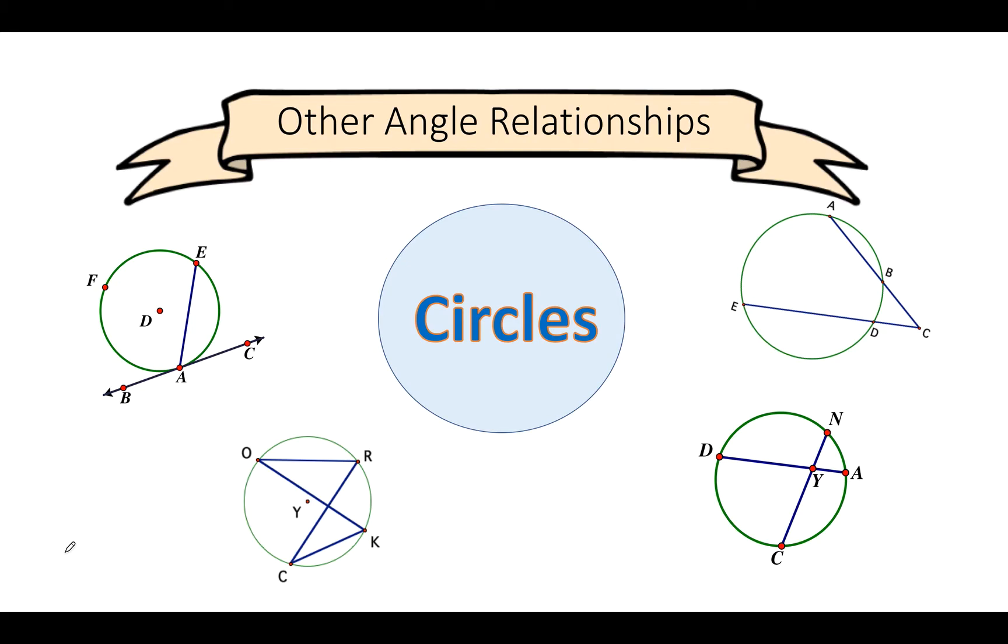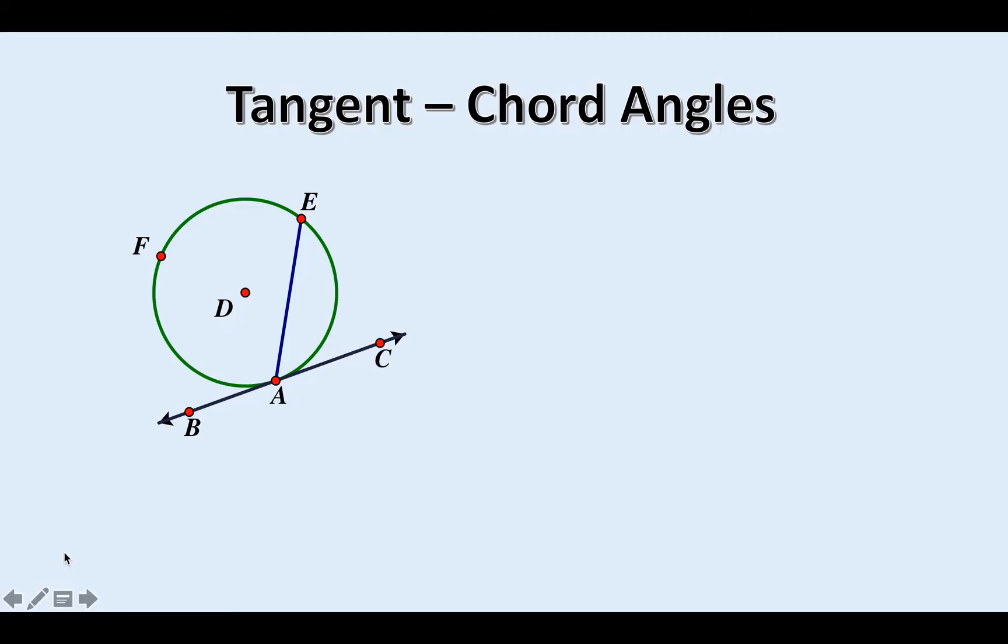Hello, we're going to talk about other angle relationships in circles today. First one we're going to talk about is a tangent chord angle. This is a chord. A chord is a segment with both endpoints on the circle. A tangent is a line that touches a circle at one point. Here is your rule for the tangent chord angle.